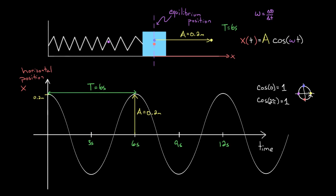That might seem abstract, but it's really useful. One cycle on a unit circle is two pi radians—if we're using radians, one cycle would be two pi, because two pi is once around the circle.